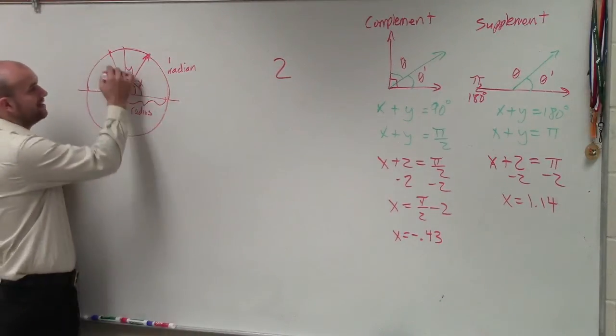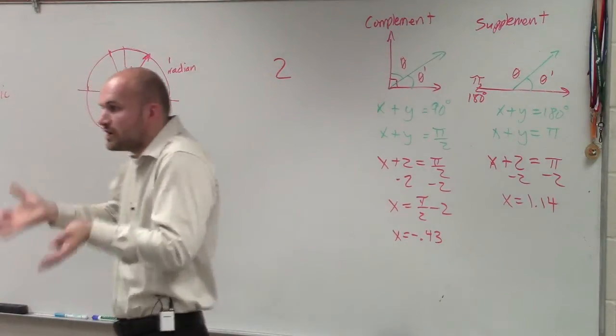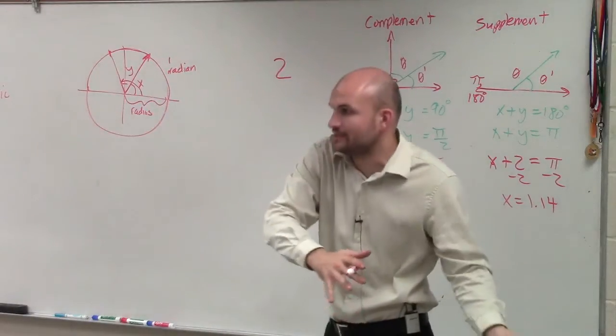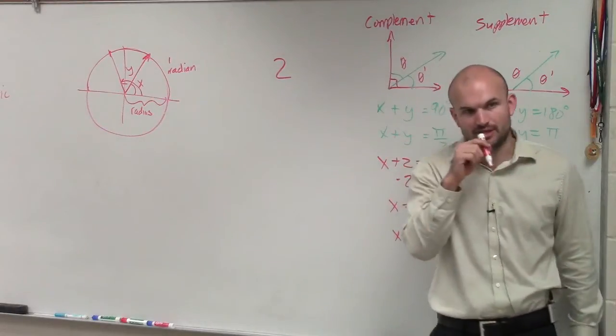That's a negative angle. The definition of the complement says, what two positive angles add up to give you 90 degrees? So if I were to give you an angle that's greater than 90 degrees, you have to add a negative angle to it, which is not going to be part of the definition of complement.